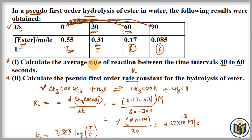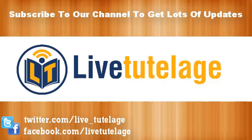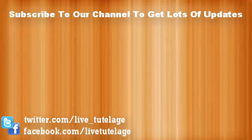In summary: in the first part I applied the average rate of reaction formula for the reactant, and in the second part I first calculated the rate constant at different time intervals given in the table, then calculated the average rate constant — which is the pseudo first order rate constant for the hydrolysis of the ester. Thank you. If you like this video, please click the like button. For more updates on IIT-JEE or NEET exams, please subscribe to our channel and follow us on Facebook and Twitter.